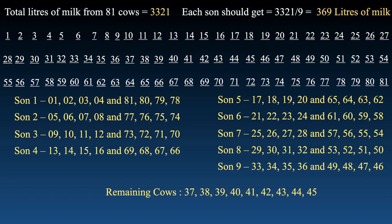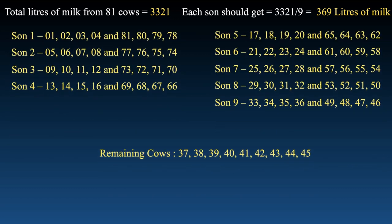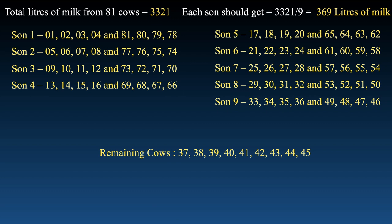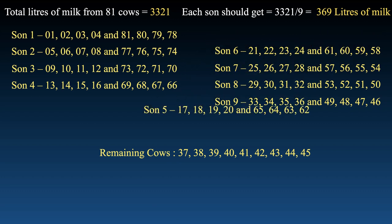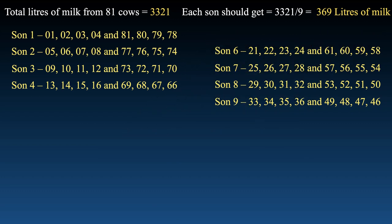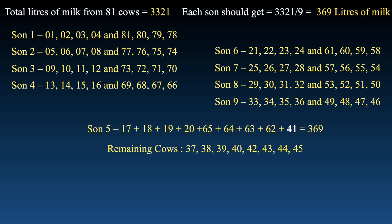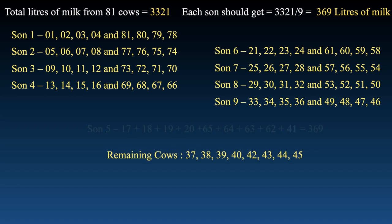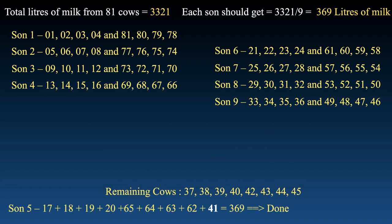Cow number 41 is the fifth in the remaining sequence, so let's give cow 41 to the fifth son. He now has 328 + 41 = 369. He is sorted. The other eight sons each still require an additional cow to satisfy the condition.